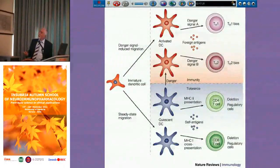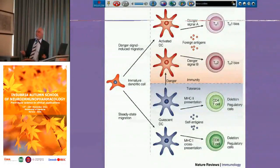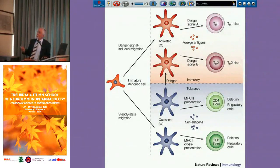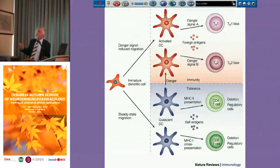Dendritic cells are the so-called professional antigen-presenting cells. They sit in the periphery, in all organs, and when they encounter a dangerous signal given by, for example, an infectious agent, they start maturing and migrating to the draining lymph node, where they present the antigen to lymphocytes and can instruct various immune responses — TH1 polarization or TH2 polarization.